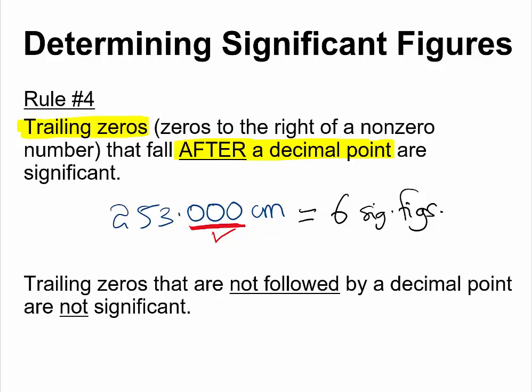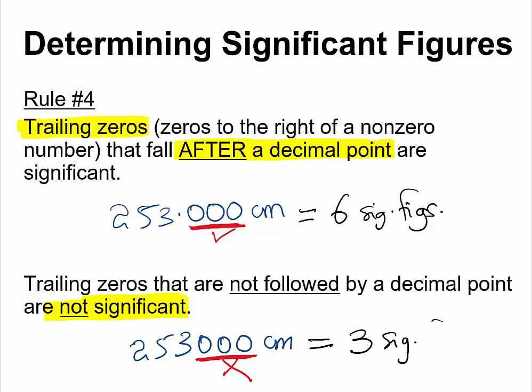Which means this measurement will end up as six significant figures. But remember, there are two types of trailing zeros. Take a look at this measurement: 25300 cm. These trailing zeros are not followed by a decimal point and they do not fall after a decimal point, so they are considered to be not significant, which means this number would be three significant figures.